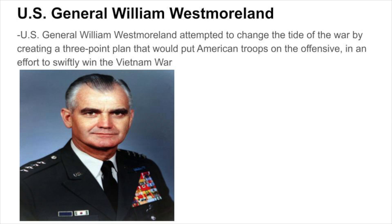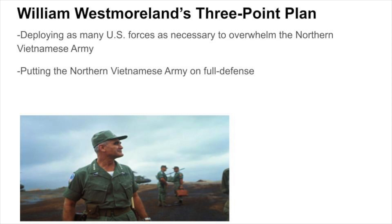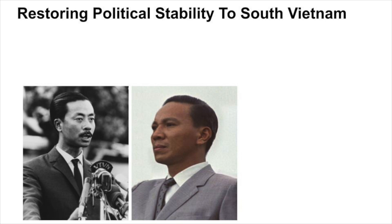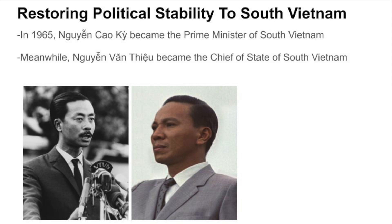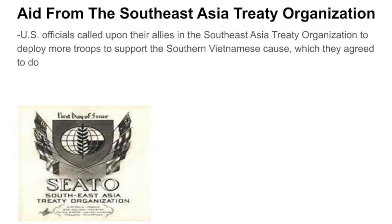U.S. General William Westmoreland attempted to change the tide of the war with a three-point plan: deploying as many U.S. forces as necessary to overwhelm the Northern Vietnamese Army, putting them on full defense, and completely destroying Northern Vietnamese forces. This plan was approved, leading to the continuation of the war effort. In 1965, Nguyen Cao Khi became Prime Minister of South Vietnam while Nguyen Van Thu became Chief of State, bringing some political stability. U.S. officials called upon allies in the Southeast Asia Treaty Organization to deploy more troops in support.